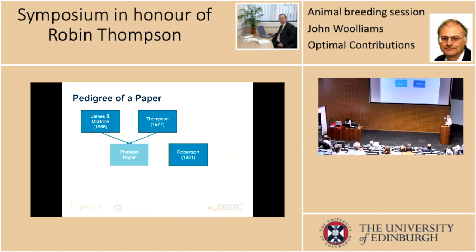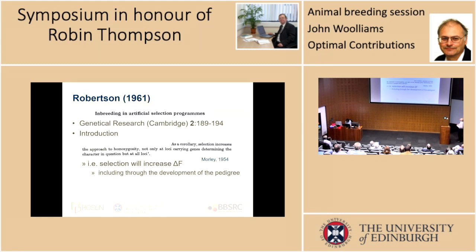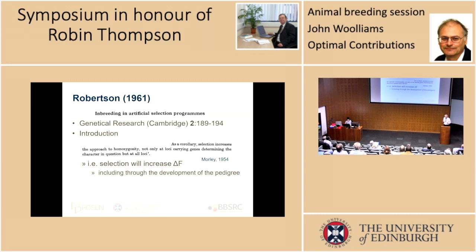That missing contribution is Robertson 1961. Robertson's paper is called 'Inbreeding in Artificial Selection Programs,' and it appeared in Genetical Research in 1961. This is a paper which has had papers written about it asking what on earth it was talking about — because it is a really quite curious paper, and brilliant at the same time.